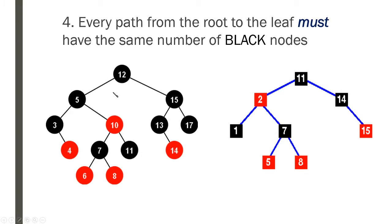The leaf, on the other hand, is the end of the tree. In this example we have six leaves, so there are six different paths from root to leaf. The rule states that in each of those six paths, you will encounter the same number of black nodes.